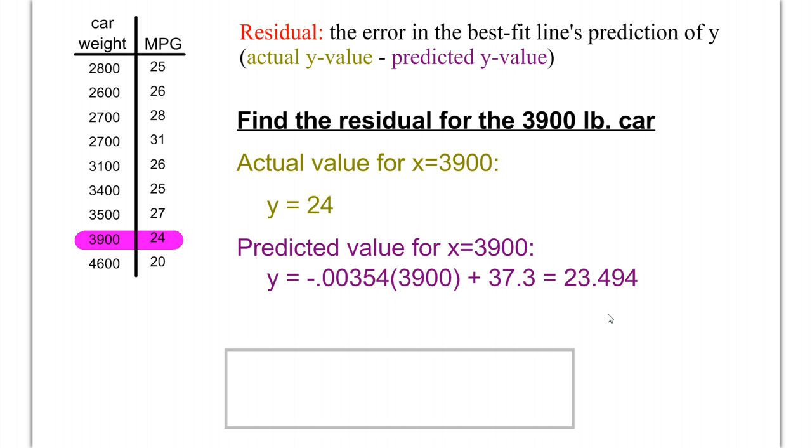When we do that, we crank through the numbers, and we end up getting 23.494. So, that is our predicted value.